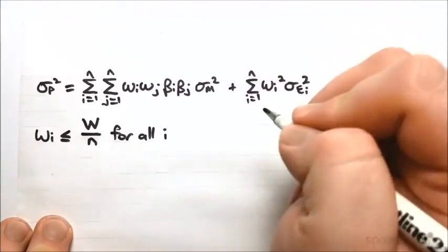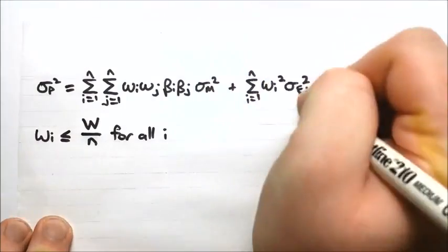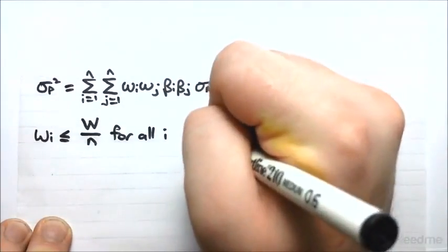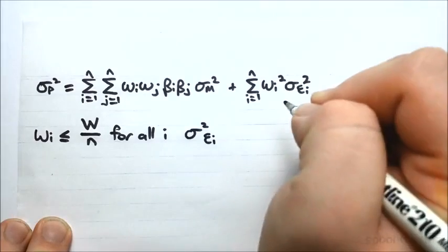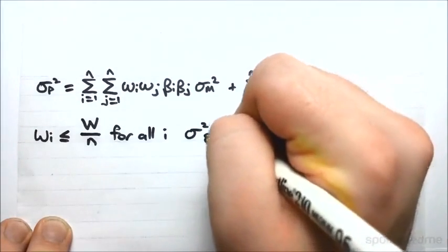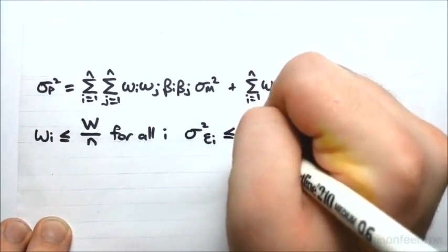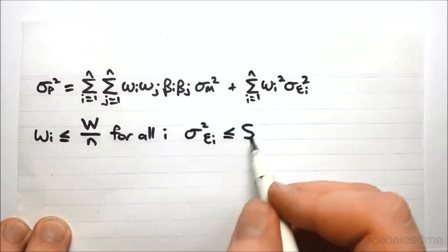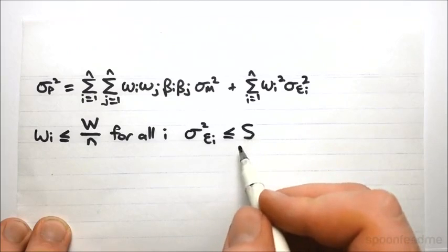Furthermore, we are going to say that all of these variances are going to be bounded by some number, and we'll call this s. So we're just saying that we don't have any infinite variances - there is some number that they are all bounded by, and it could be anything.